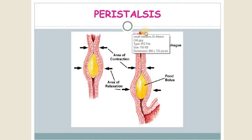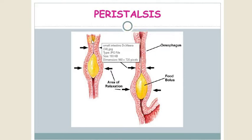At a particular point in the small intestine, there is presence of a food bolus. Prior to that, there is a contraction, and in the adjacent segment, the next segment, there is relaxation.